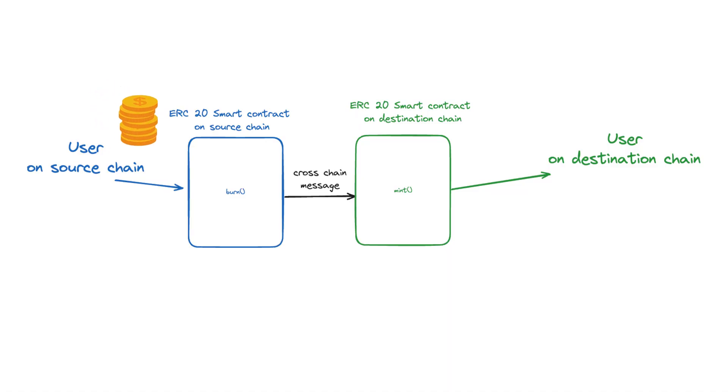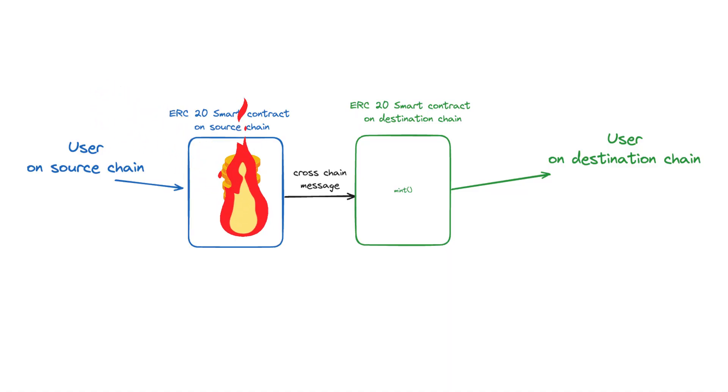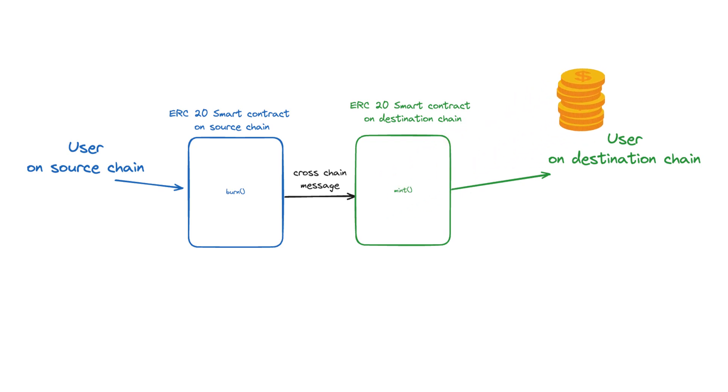So how does bridging work? There are a couple of different mechanisms. The first is a burn and mint bridge, where the tokens are burned on the source chain — taken out of circulation — and minted on the destination chain, given to you. The same number of tokens that are burned are minted, keeping the total supply constant across the two chains, so there's no doubling up.